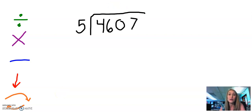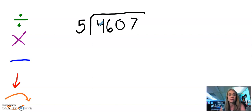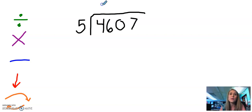Let's start with the first step: divide. We're going to ask ourselves, how many times does five go into four? Another way to think about it is five times what gets me four or close to four? We know that four is not a part of the five facts, which means that five can't go into four. So we put a zero on top.